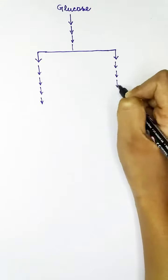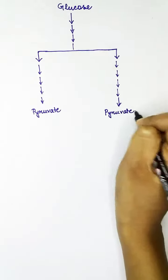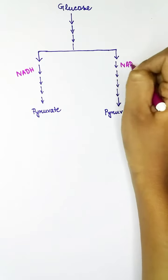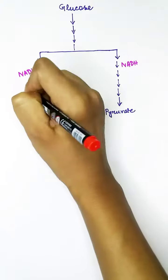In the glycolysis pathway, the glucose is broken down into pyruvate. From one glucose we get two pyruvates, and in this process two NADH are produced and four ATPs are produced.